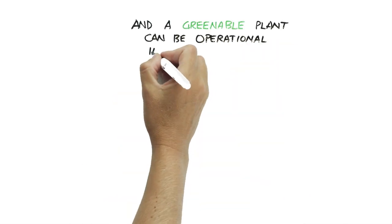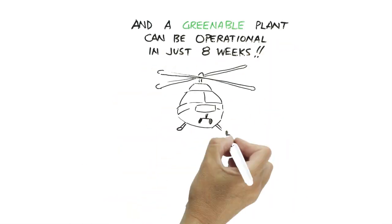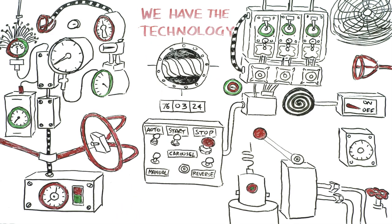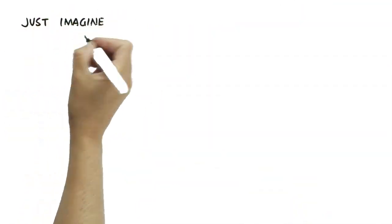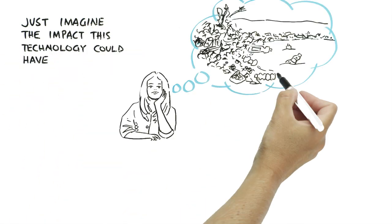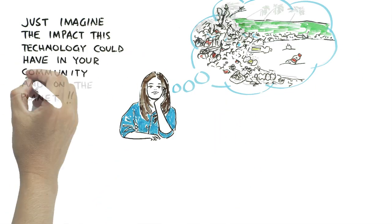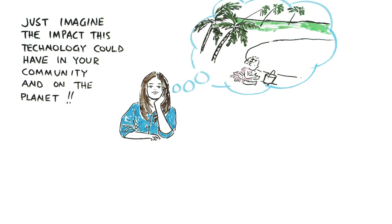And a Greenable plant can be operational in as little as 8 weeks. Look, we have the technology, but what good is it if no one uses it? Just imagine the impact this technology could have in your community and on the planet! We are really excited to think of the possibilities!